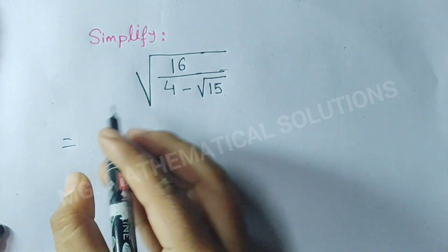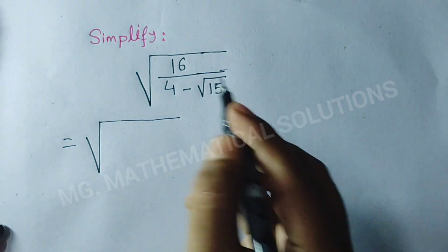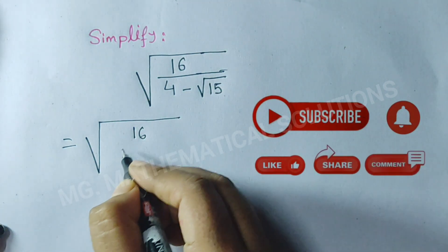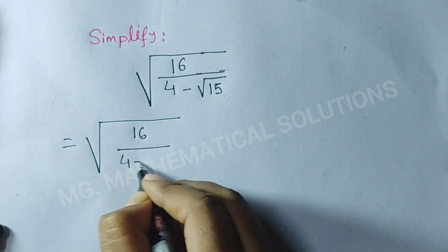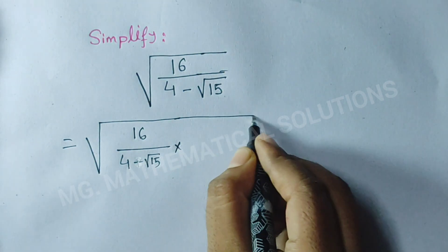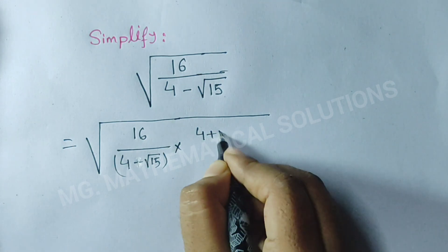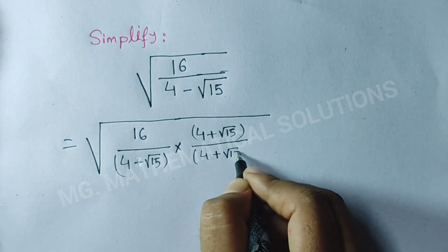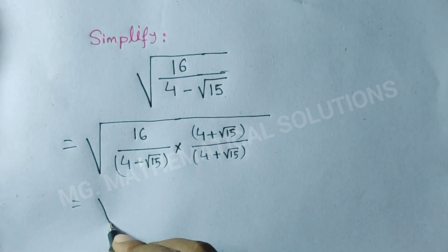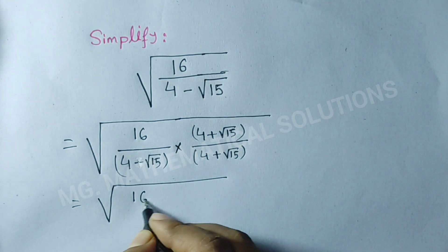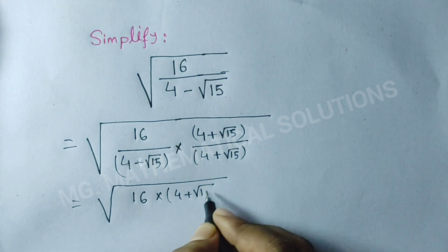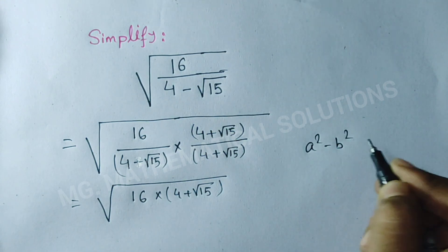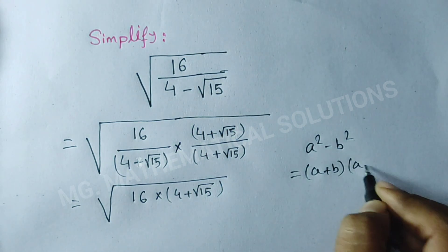We multiply numerator and denominator by (4 plus root of 15): root of [16 divided by (4 minus root 15)] times (4 plus root 15) over (4 plus root 15). Here we use the formula a squared minus b squared equals (a plus b)(a minus b).